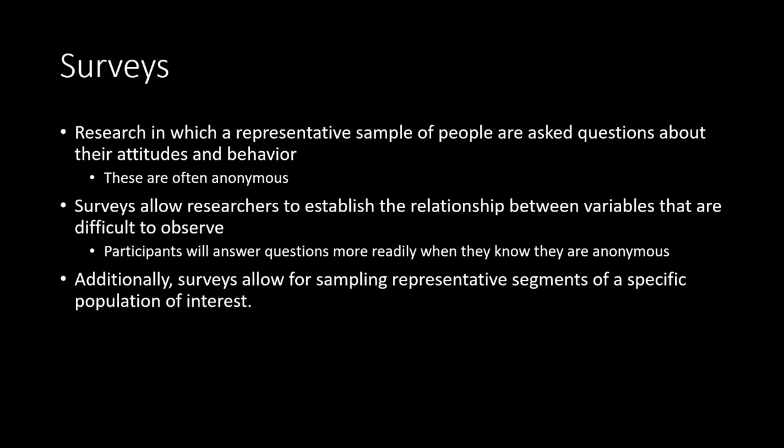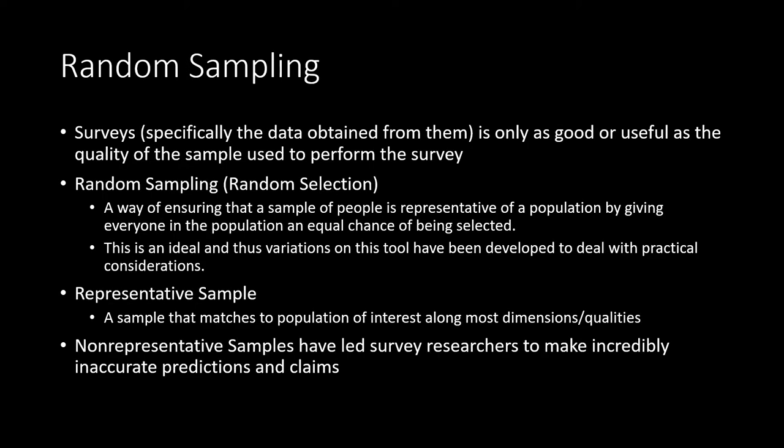Additionally, surveys allow for sampling representative segments of a population of interest — meaning you can ask questions of a subset of the population that approximates the population as a whole along vital metrics. For example, in the United States, race or ethnicity is a big one. If you were to ask only one ethnic subset about certain ideals they held, you would be ignoring other sections of the population, and all answers from that biased sample would not do a good job of reflecting the overall population's ideologies. A survey is only as good or useful as the quality of the sample used.